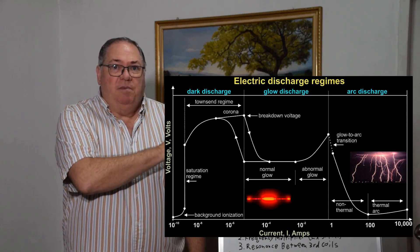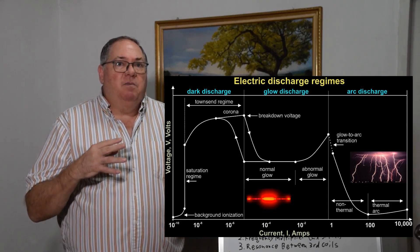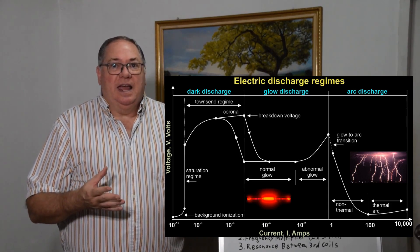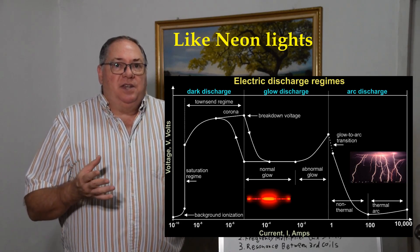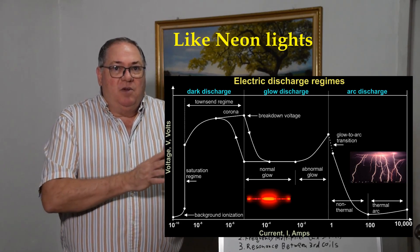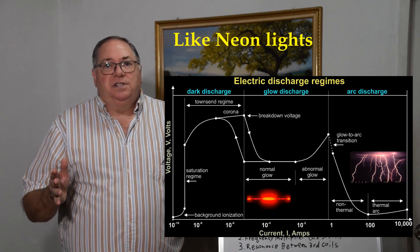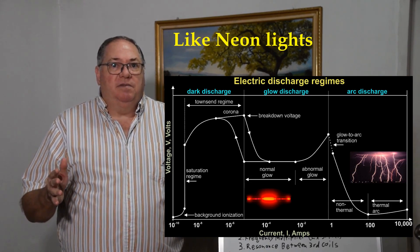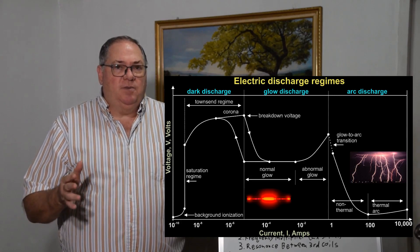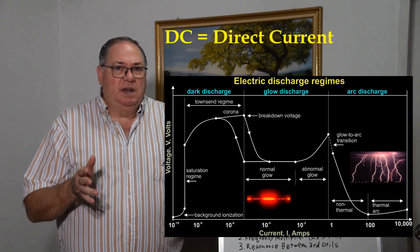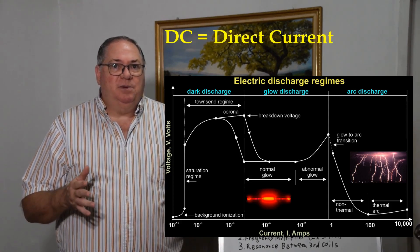When you get breakdown and you're exciting the gas, you get glow discharge. In some cases you can have glow discharge followed by dark discharge as the energy falls off. You see this with DC tubes, but it's not visible when running alternating current.